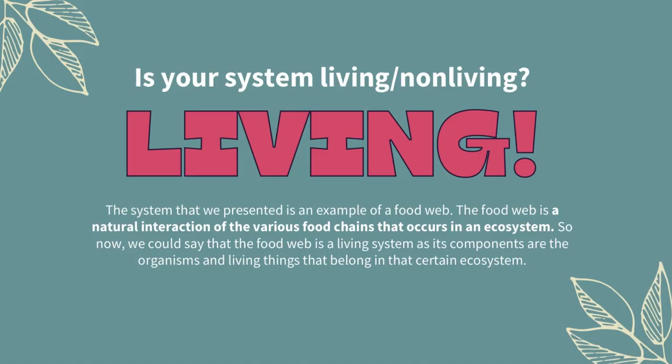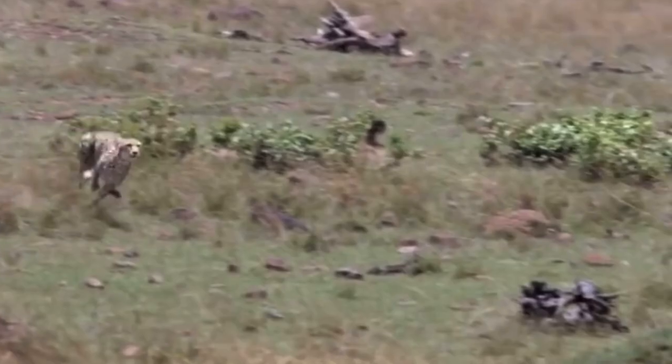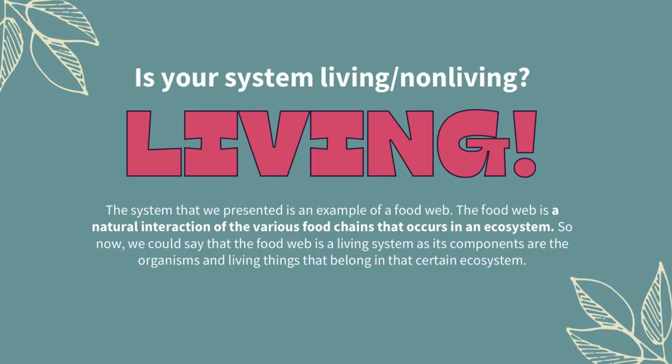Before we observe the food web diagram within this presentation, let us first answer the question: is your system living or non-living? Our answer is it is living. The system that we present is an example of a food web. The food web is a natural interaction of the various food chains that occurs in an ecosystem. We could say that the food web is a living system as its components are the organisms and living things that belong in that certain ecosystem.